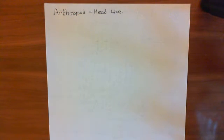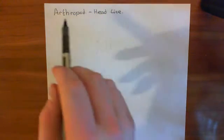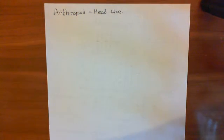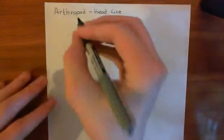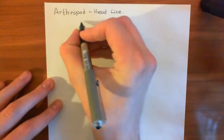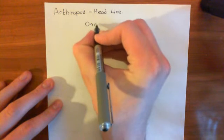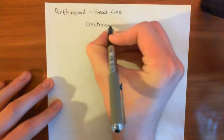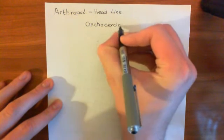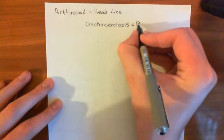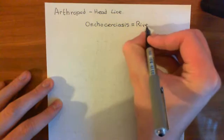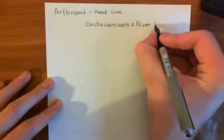The main use of ivermectin in clinical medicine — since we have other better drugs against headlice — is onchocerciasis. Onchocerciasis, or river blindness, is caused by a parasitic worm known as Onchocerca volvulus. We're going to use ivermectin to treat it.